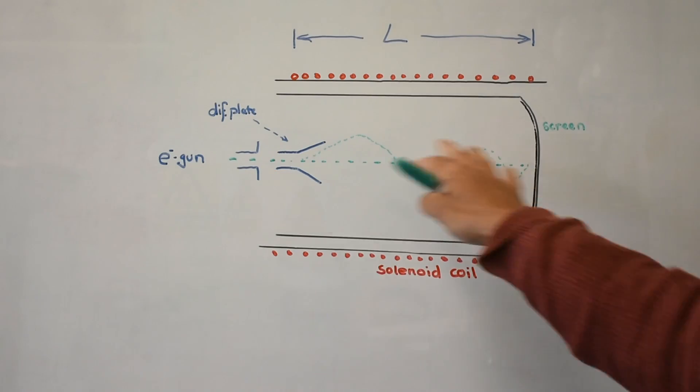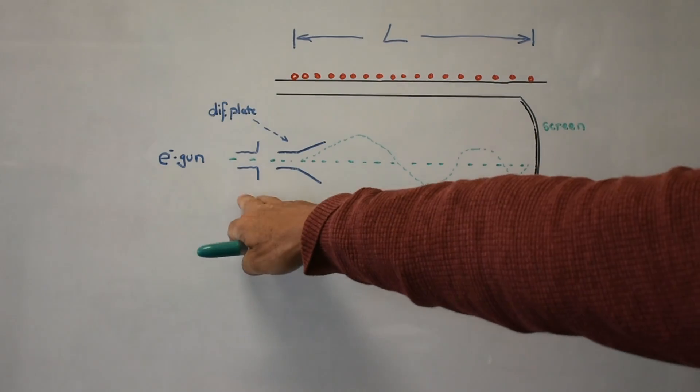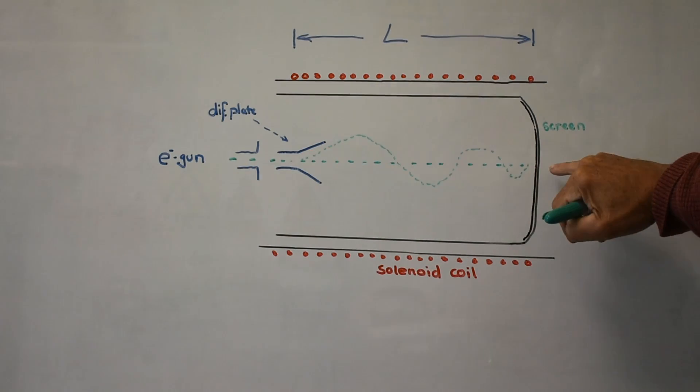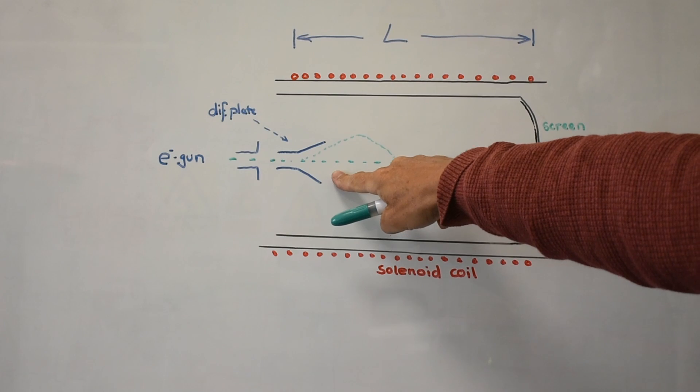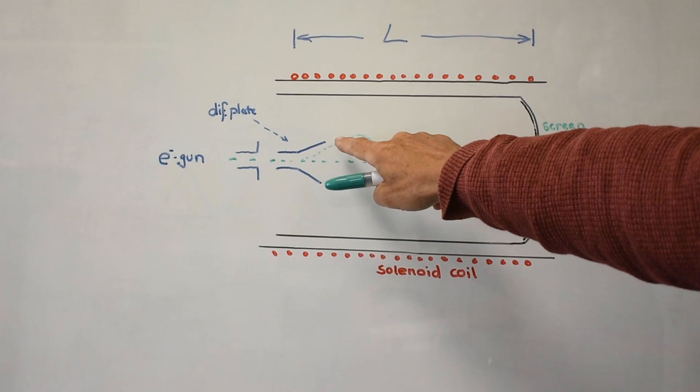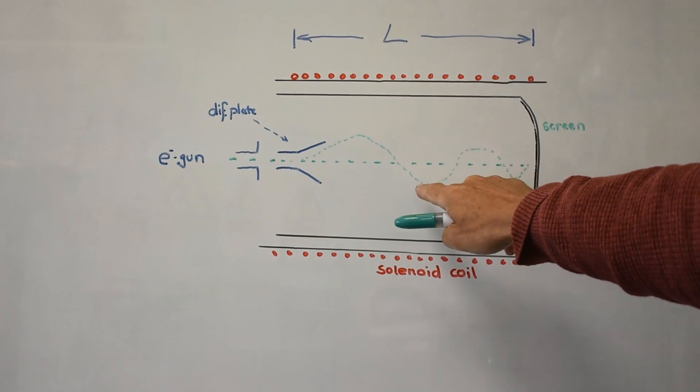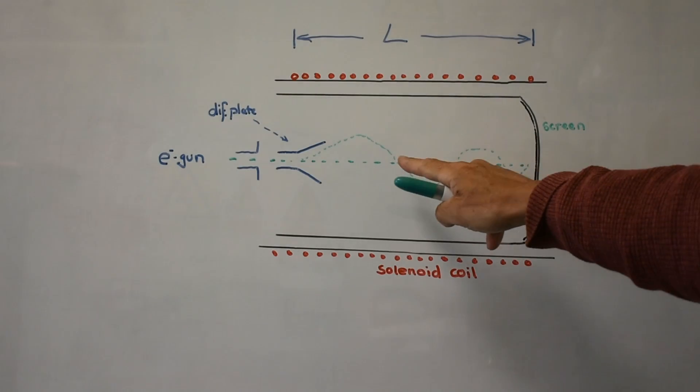This is the side view with our screen here and our solenoid coil around the outside and our electron gun at this end. The straight through path of the electron beam would give you the spot here. But we're using the deflection plate with 50 hertz in order to scan this area. So it's giving you the path the beam would maybe take. But when it's influenced by this coil, it goes into a spiral.